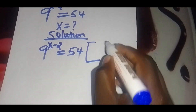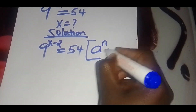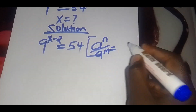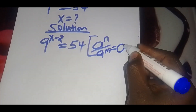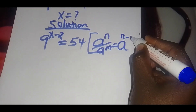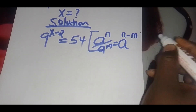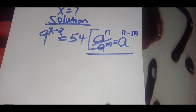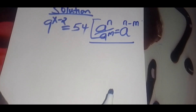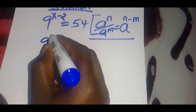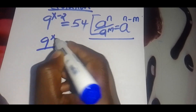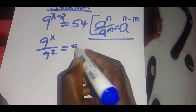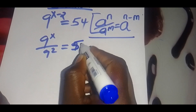Applying the indices identity, we have A raised to the power m, this is equal to A raised to the power n minus m. Let's apply this identity so that we'll have 9 raised to the power x, divided by 9 squared, this is equal to 54.